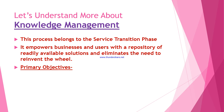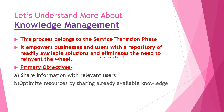What are the primary objectives of knowledge management? The first primary objective is to share information with relevant users. They can be internal stakeholders, external stakeholders, internal customers, or external customers. So sharing information with relevant users is the primary objective of knowledge management.